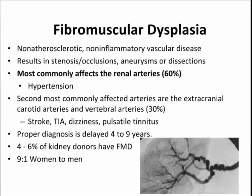Fibromuscular dysplasia is an interesting disease and we really don't understand much about its etiology. It's clearly a non-atherosclerotic, non-inflammatory disease that results in stenosis or complete occlusions of the arteries. Within the same artery, there can also be aneurysms or dilatations — enlargement of the lumen — and this condition can predispose to dissections. The most commonly affected arteries are the renal arteries; about 60% of patients will have renal artery involvement and present with hypertension.